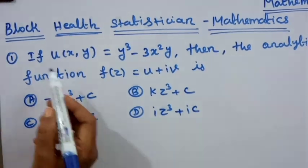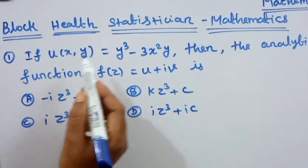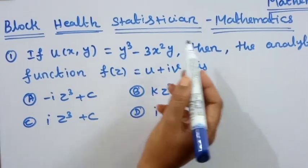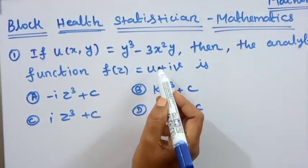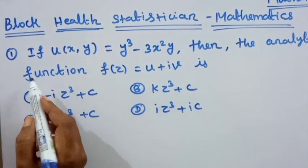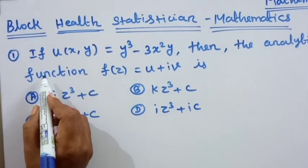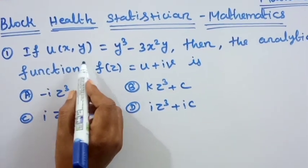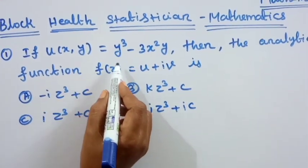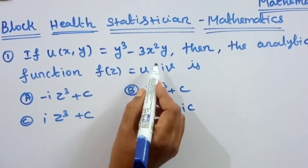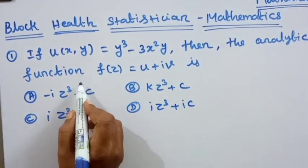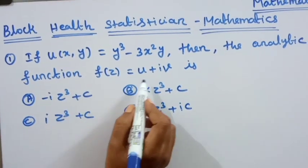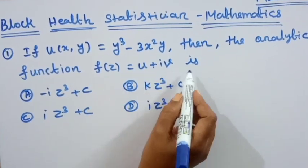Good morning students. We have a black health statistician exam for mathematics — a previous question — and we will discuss the first question. If u of x, y is equal to y cube minus 3x square y, then the analytic function f of z is equal to u plus iv.